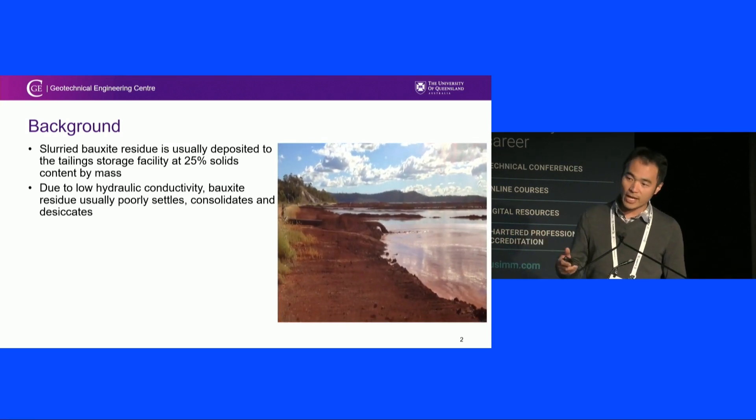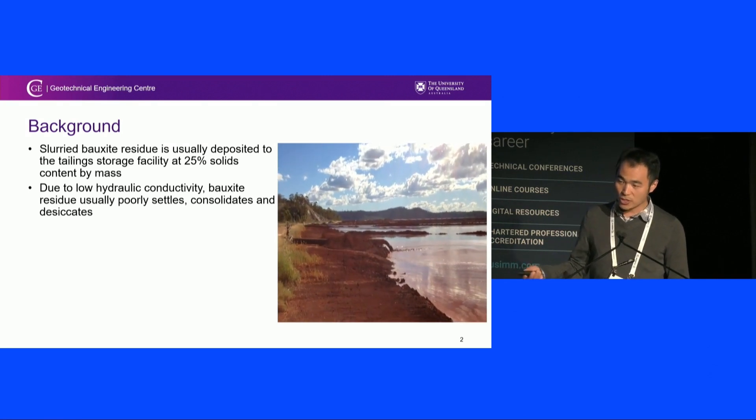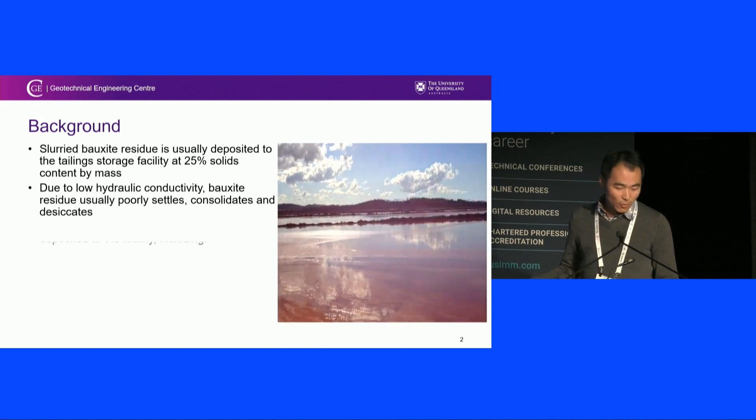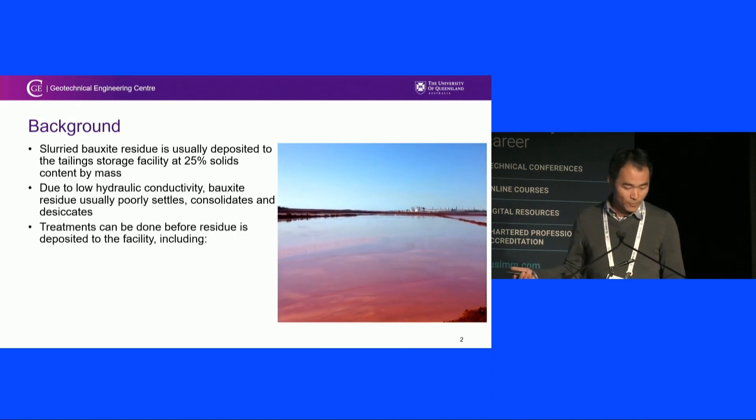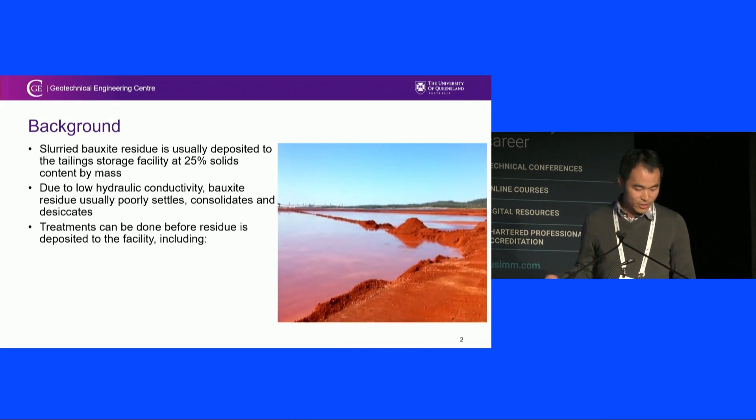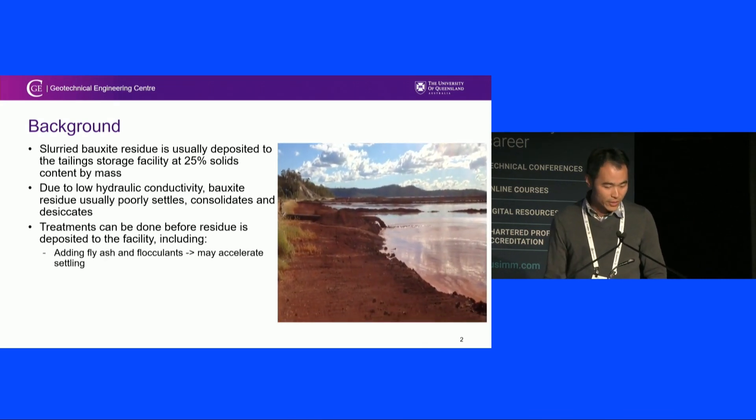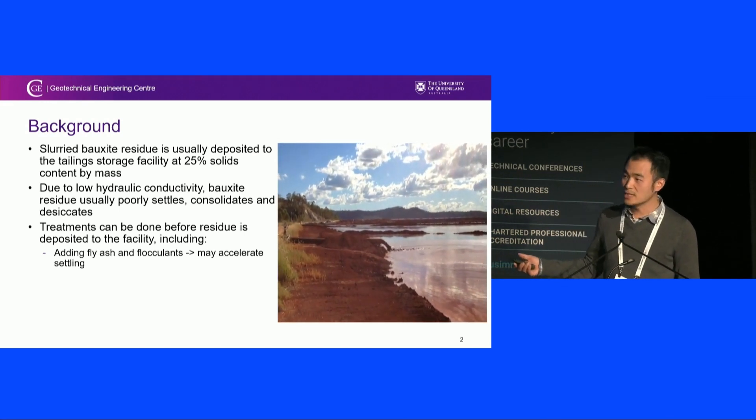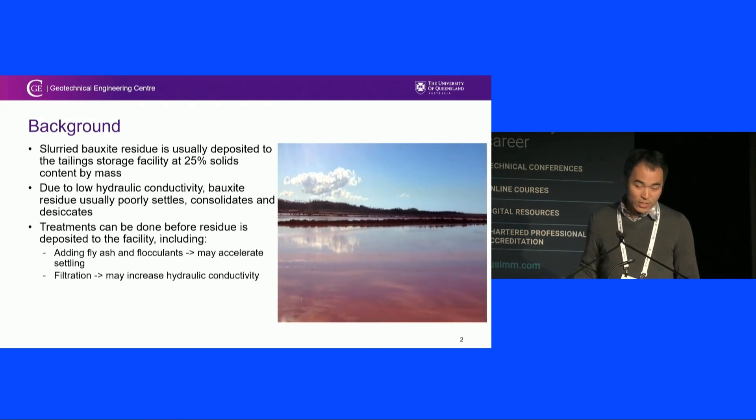There are processes we're talking about to improve this. One of them is farming - you can do in-loading at high moisture content and then dozering at low moisture content. But what if you don't have a large footprint? Some processes are proposed to improve its strength. That includes adding fly ash and flocculants, which could lump all the particles together and may increase the hydraulic conductivity.